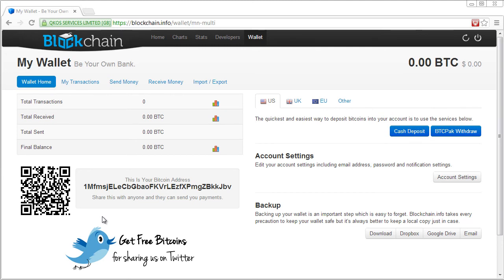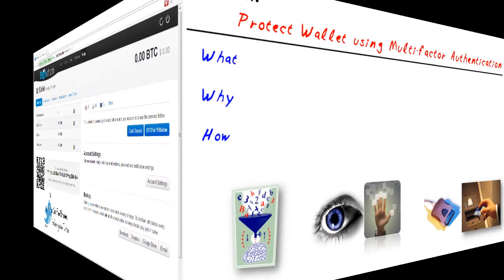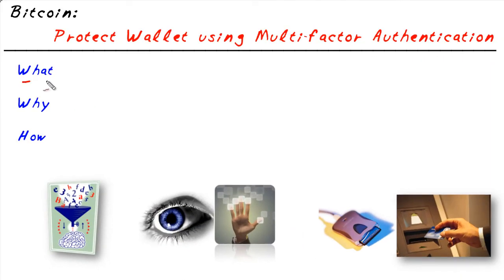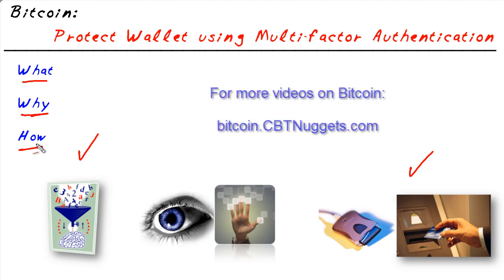Now someone to get into this account — which has zero Bitcoin, by the way — would have to know the ID or the alias, the password, and also have the Google Authenticator that's linked to this account. By doing this, we've just significantly increased the security of somebody logging in as us to this e-wallet. In this micro nugget, we've identified what multi-factor authentication is: making an individual prove using two different factors, like something they know and something they have, before giving them access to a system. We also did a quick demonstration of blockchain.info implementing multi-factor authentication using Google Authenticator.